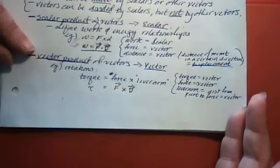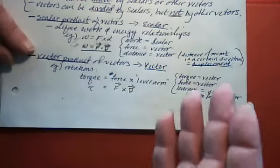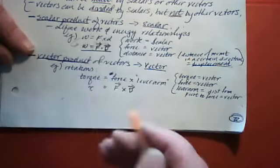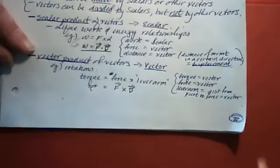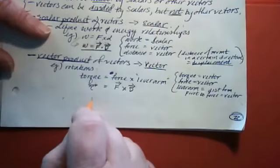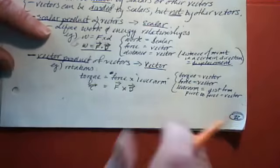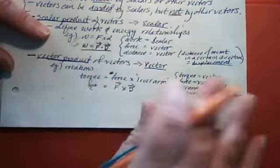Torque uses the lowercase Greek letter tau because lowercase t is time and uppercase T is temperature. Uppercase tau looks exactly like an uppercase T, so lowercase tau it is. To summarize: when you do the cross product of two vectors, you get another vector. When you do the dot product of two vectors, you get a scalar. We'll see that in more detail starting now.